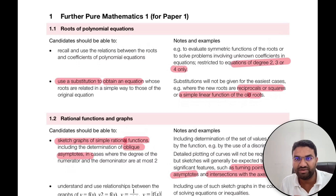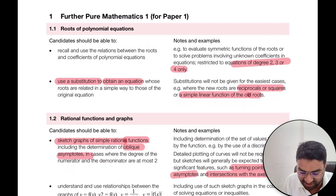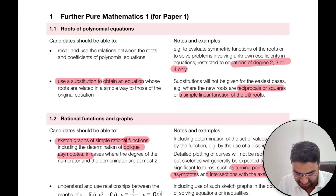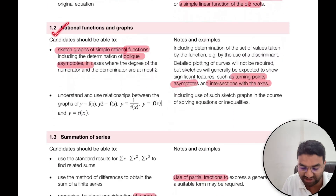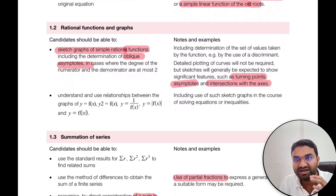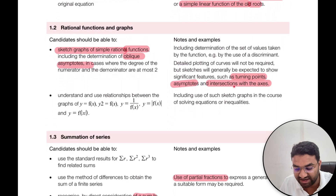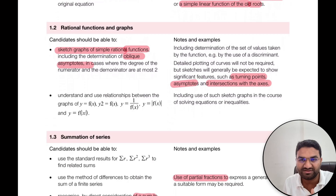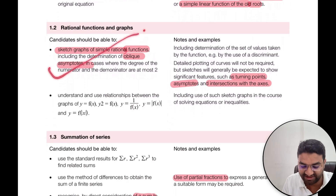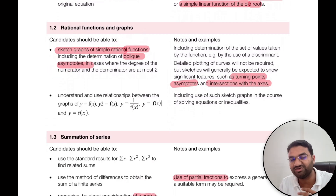In roots of polynomial equations, we cover equations of degree two, degree three, and degree four. We use the substitution method to solve the equations, and also reciprocal, square, and simple linear functions. The second part is rational functions — more specifically, rational functions in A over B form. We have to draw the graphs using turning points, asymptotes, and intersections of the graph with the axes using various methods. If we understand these basic concepts, it's very easy and can fetch good marks.